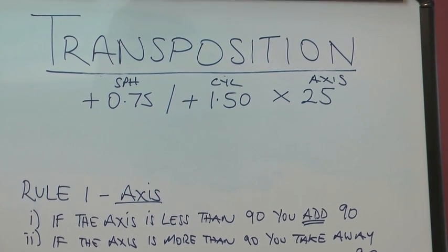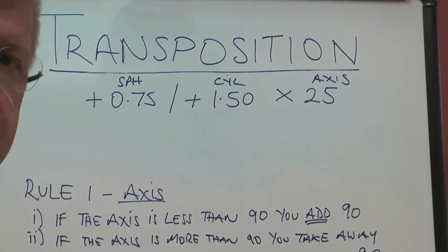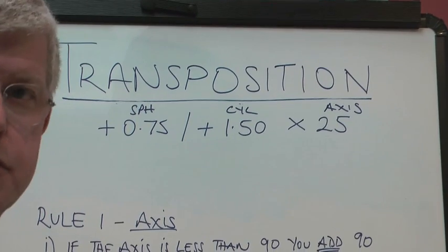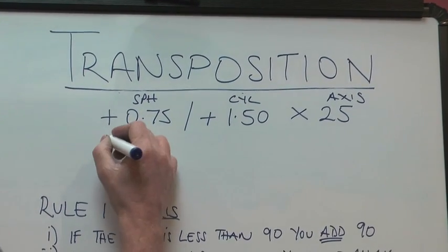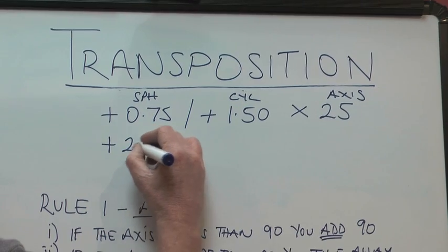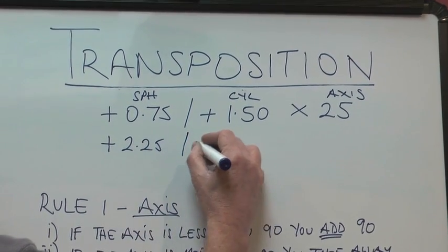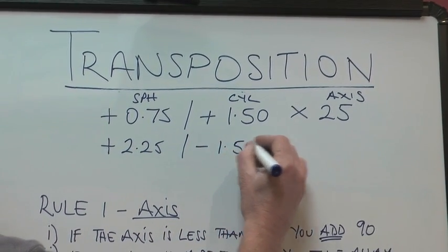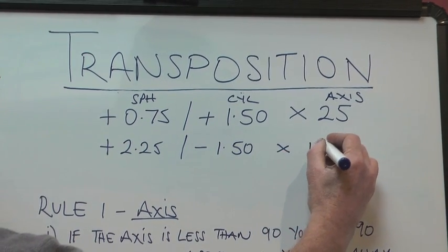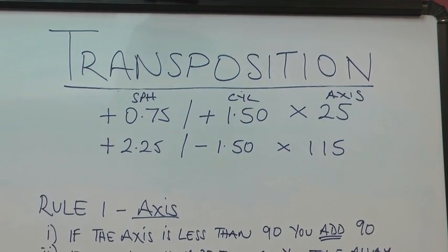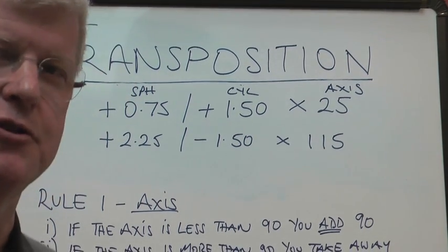Now, if you want to transpose that and write it in its other form, you'll end up with this. You'll end up with plus 2.25 minus 1.50 axis 115. And I'm going to just now explain how you do it.